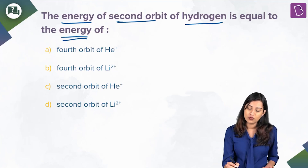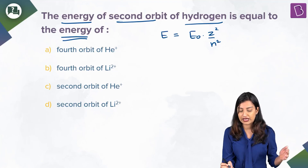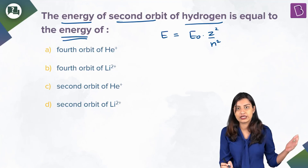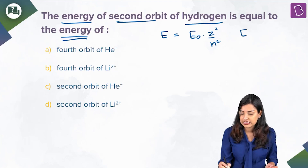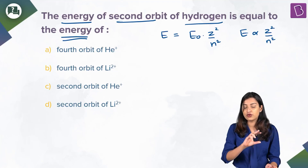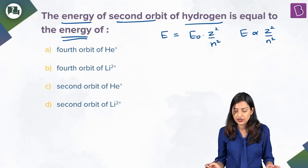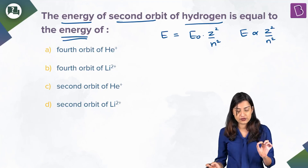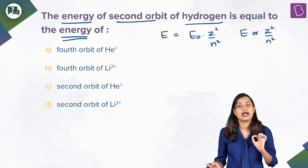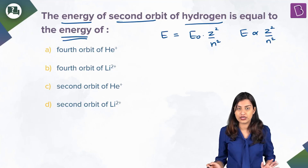You know that E = E₀ × Z²/N². We don't care about E₀ as long as units are consistent, so E is directly proportional to Z²/N². Whatever the question asks, we find the Z²/N² ratio, then find the same ratio for options A, B, C, and D. Wherever the ratio matches, that is the answer.